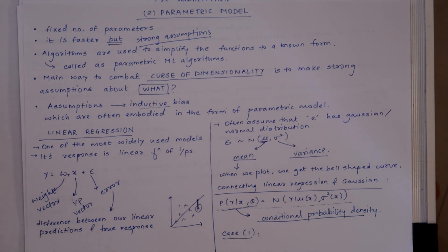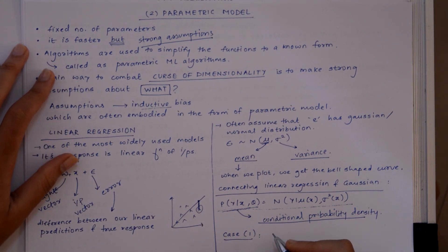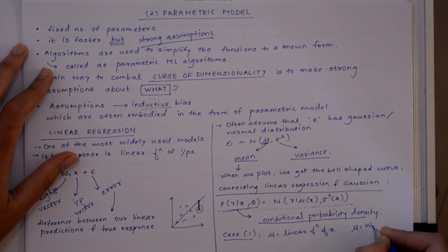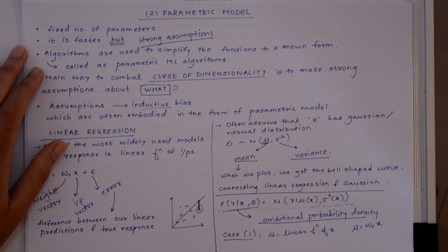Now suppose we consider the simplest case wherein we can write mu as a linear function of x. So we can write this as W^T of x, and the noise we can consider is fixed.